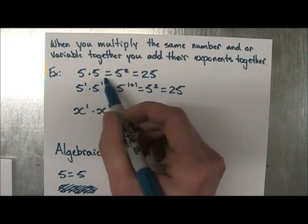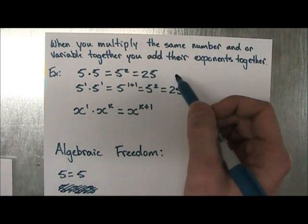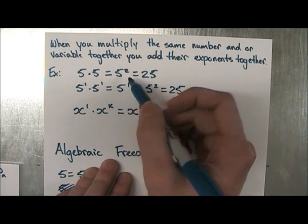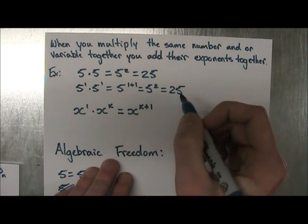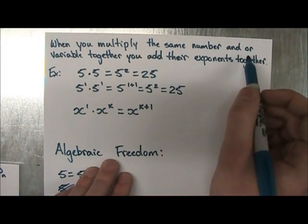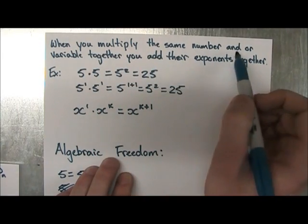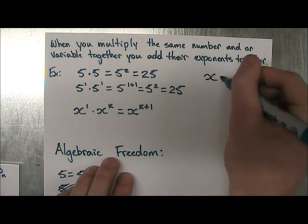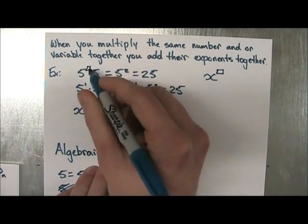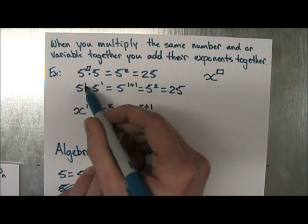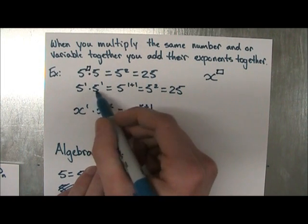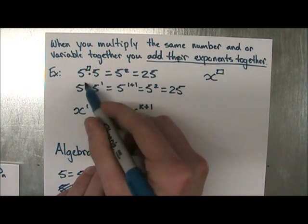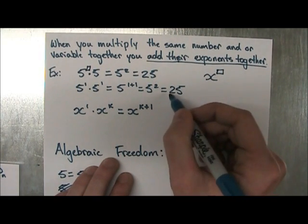So just consider this for now. But you agree that 5 times 5 is equal to 5 squared, which is the same thing as 25, right? Well, how did you get this 5 squared? When you multiply the same number and or variable together, you add their exponents together. Every number and a variable, although there's no exponent here, there is one. We just don't write it down because it's assumed when it's 1. So this is actually 5 to the 1 times 5 to the 1. And what you do when you multiply them, you add their exponents together. We're doing 5 to the 1 plus 1, which gives us 5 to the 2, which is the same thing as 25.